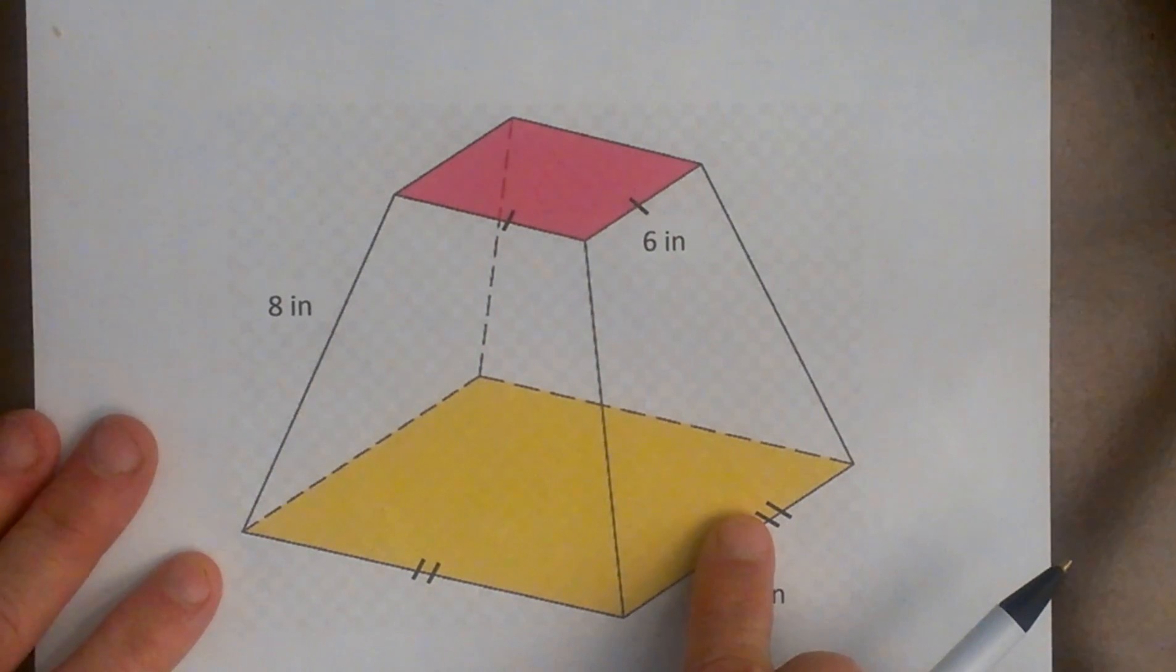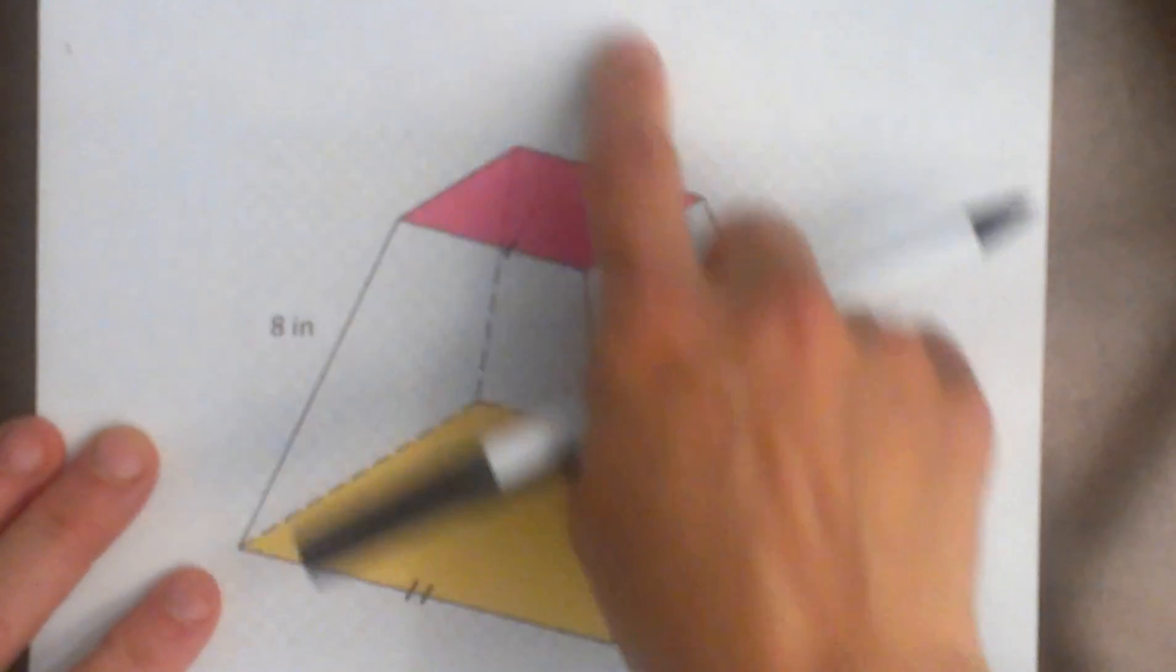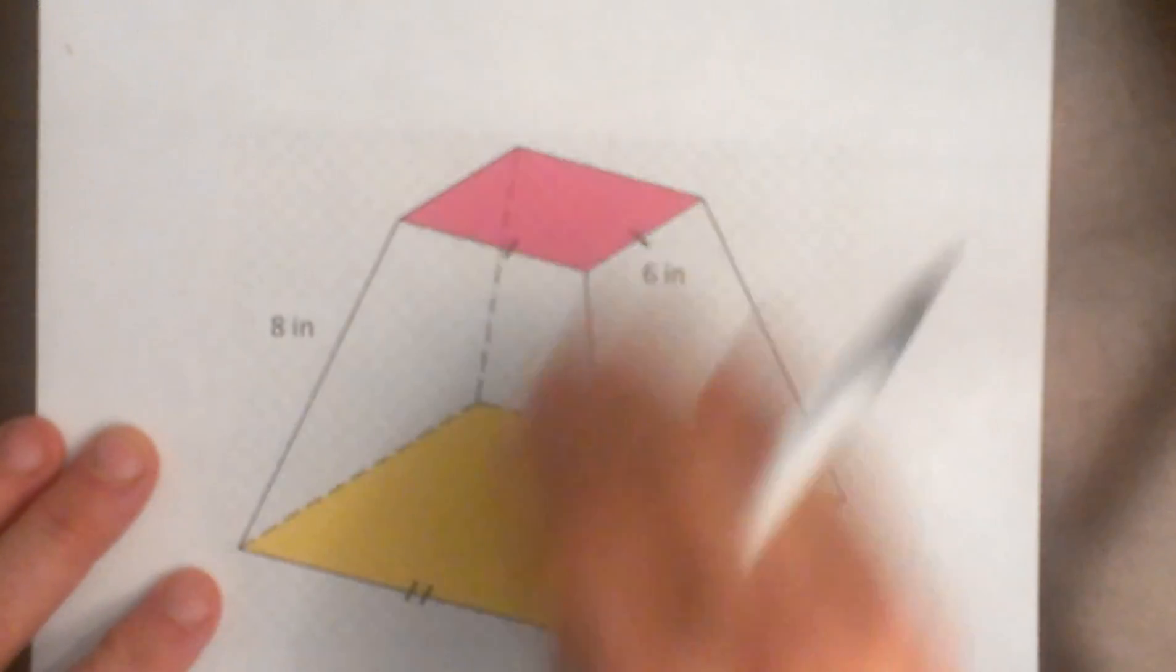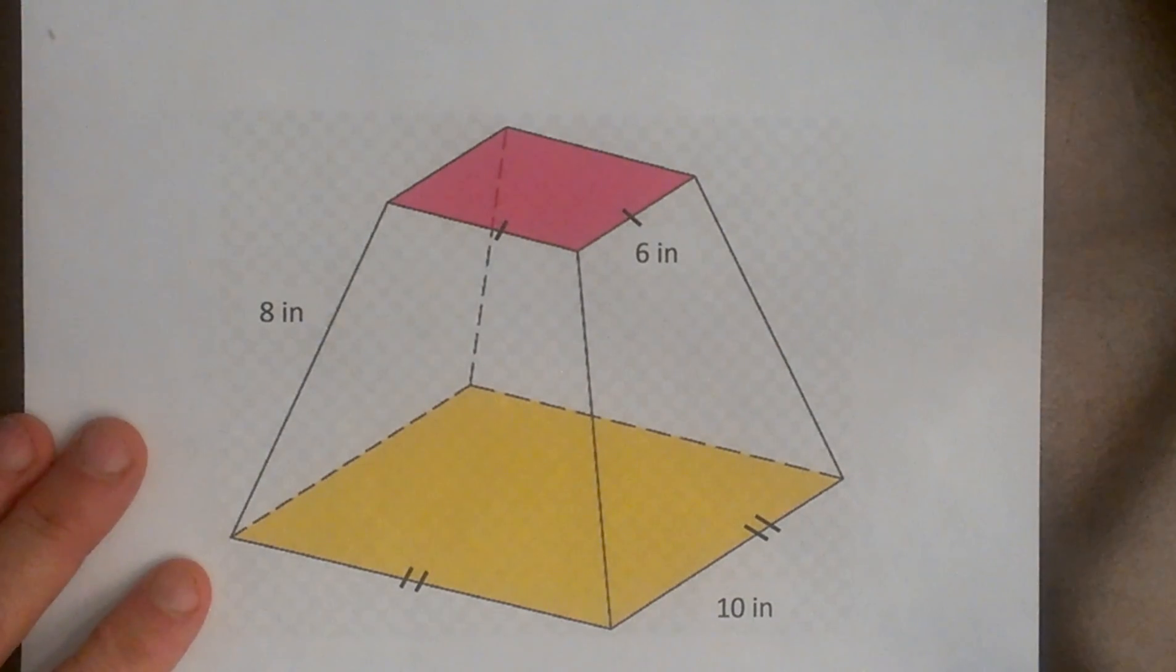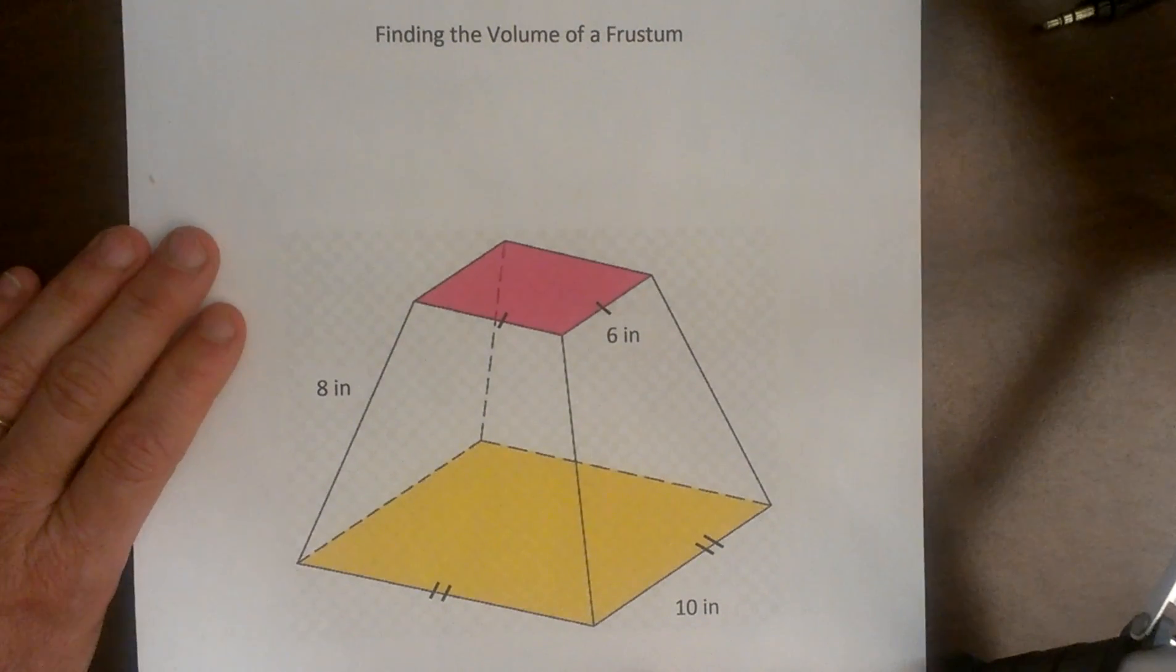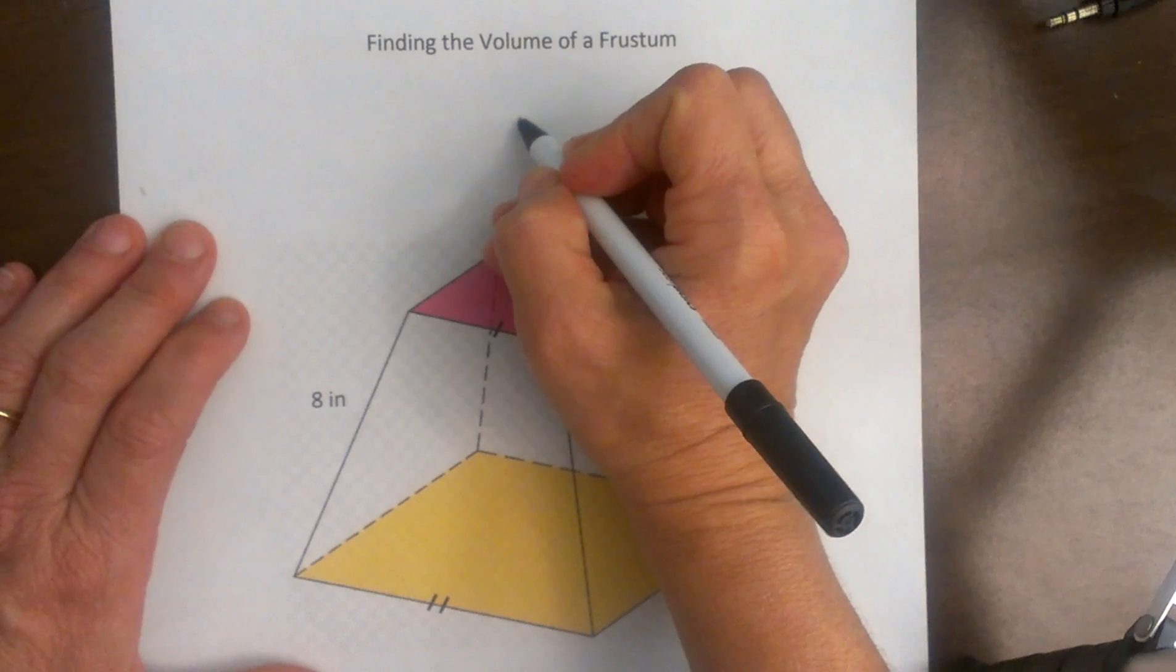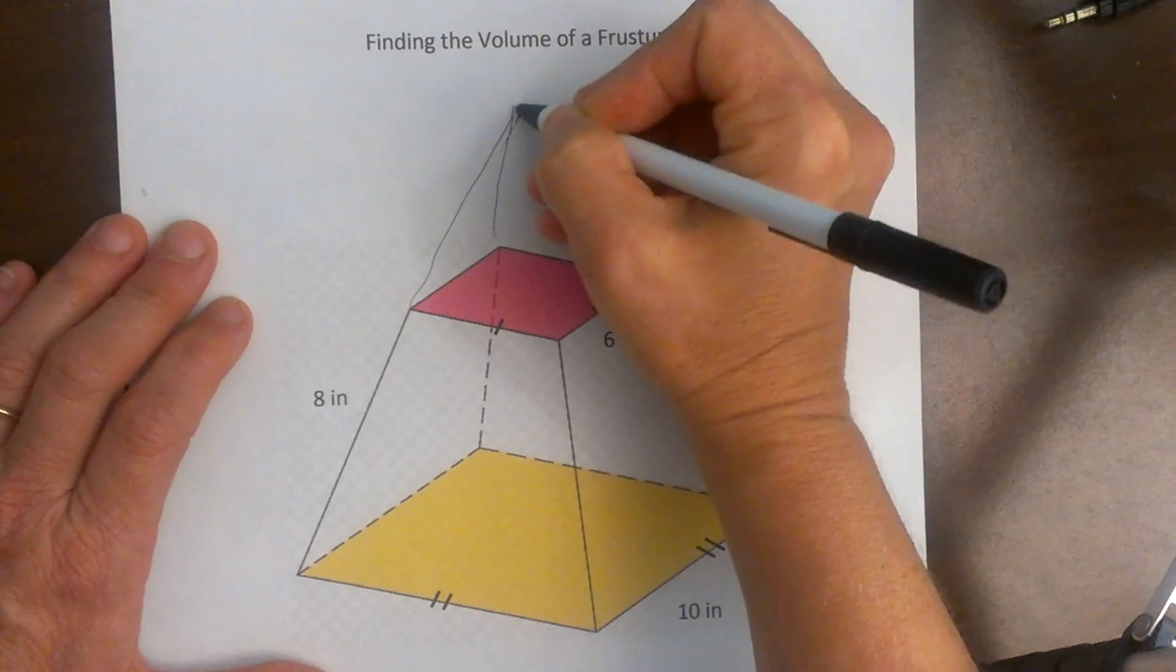Now to find the volume of this three dimensional figure we actually have to find the volume of a full pyramid and subtract the part that is chopped off or cut off of the top. We are going to work through the steps on how you would do that. First we are going to have to visualize what part of it was cut away.